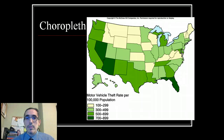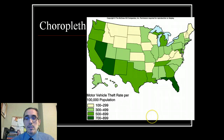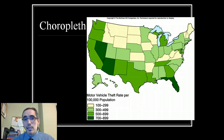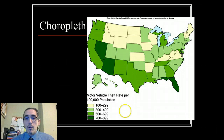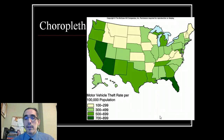A much more common type of map — and one that you'll be working with more extensively — is what's known as a choropleth map. Here, information is organized by some kind of spatial map unit. In this particular instance, the units are states, so we're looking at motor vehicle theft rate per state, organized as a rate per 100,000 population. The point is that the information is communicated by state, so you get a single number for each state, and across the whole country you can see the variation in rates across states.